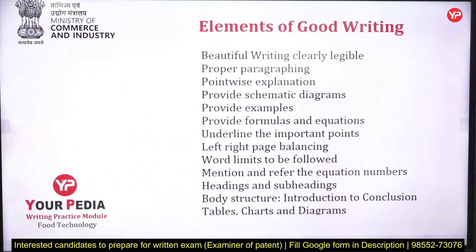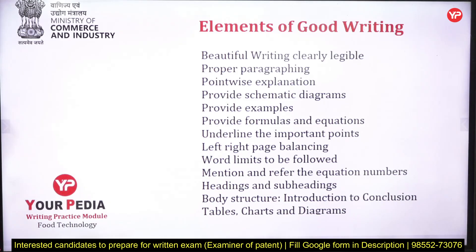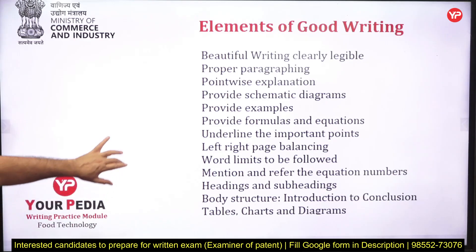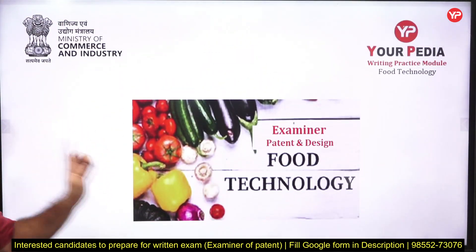We want you to hone the skill so that you write well and score better. Elements of good writing include legible handwriting, proper paragraphing, point-wise explanation, schematic diagrams, examples, formulas and equations, underlining, left-right page balancing, following word limits, mentioning equation numbers, headings and subheadings, body structure from introduction to conclusion, and tables, charts, and diagrams.